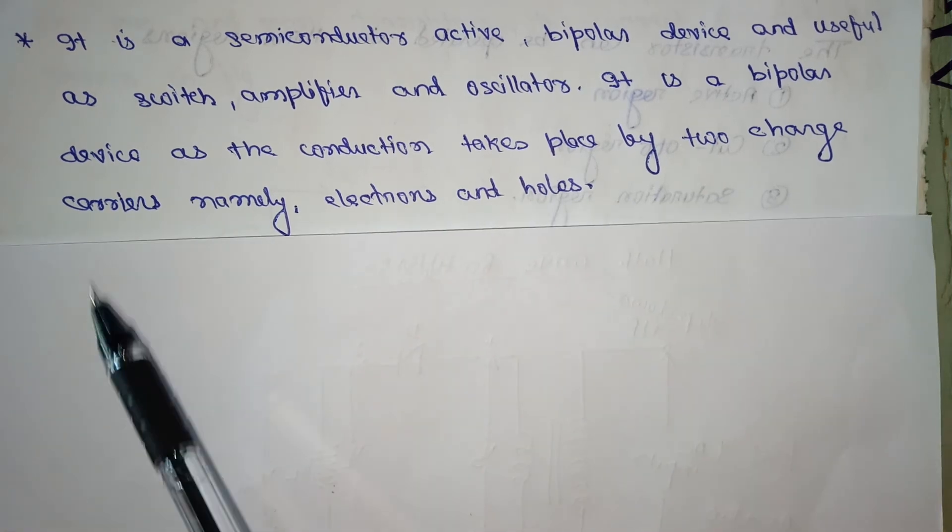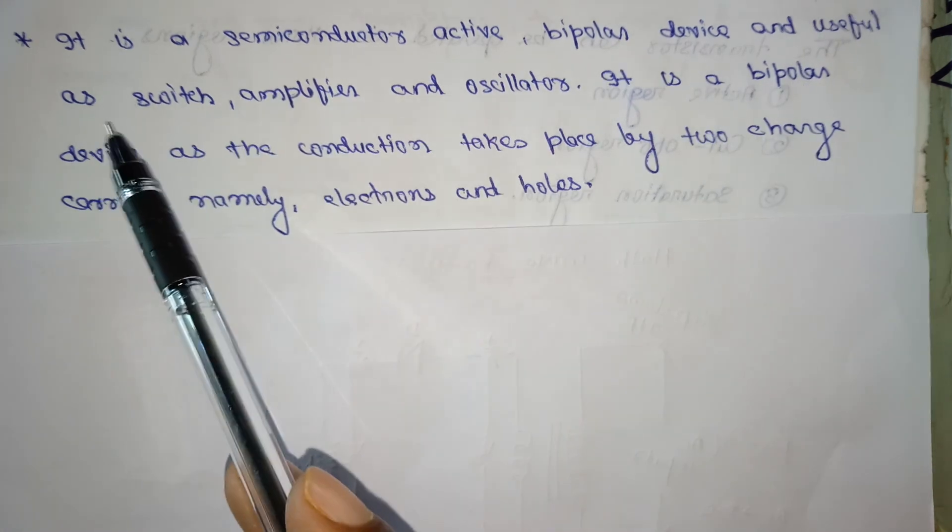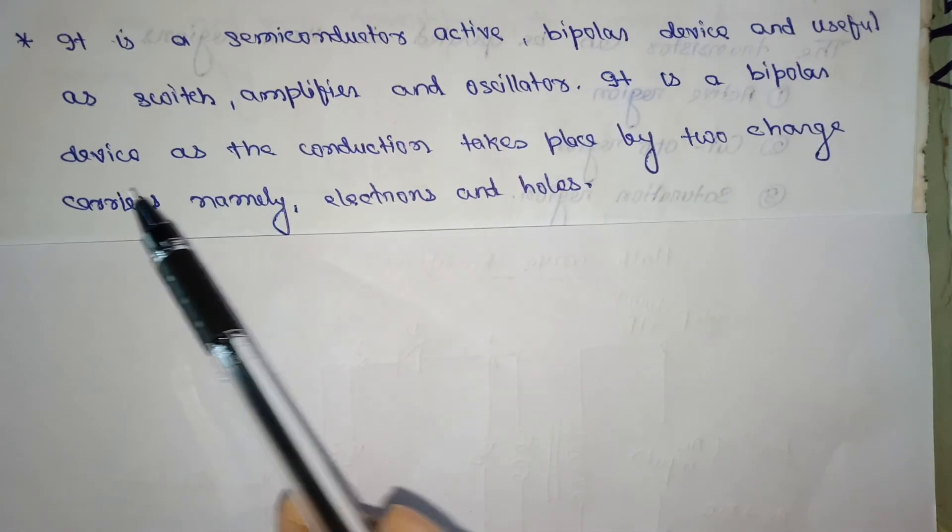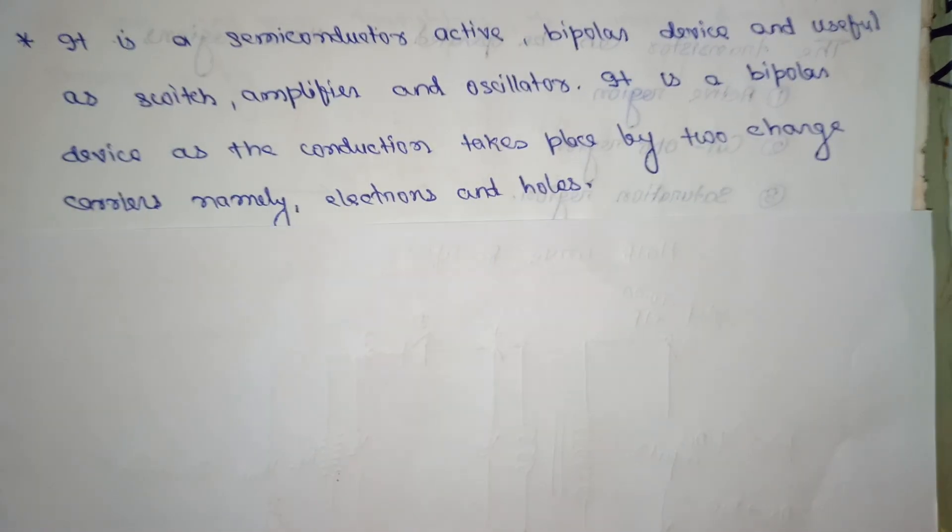Transistors. This is the definition of transistor: it is a semiconductor active bipolar device useful as a switch, amplifier, and oscillators. It is a bipolar device as the conduction takes place by two charge carriers, namely electrons and holes.